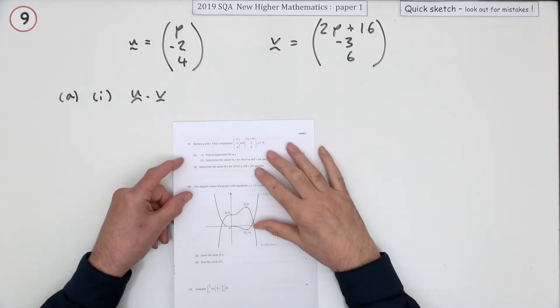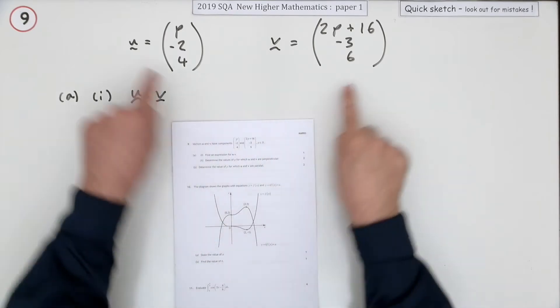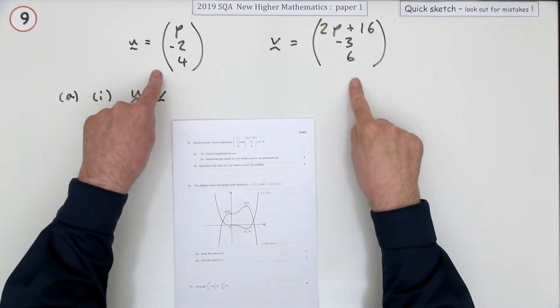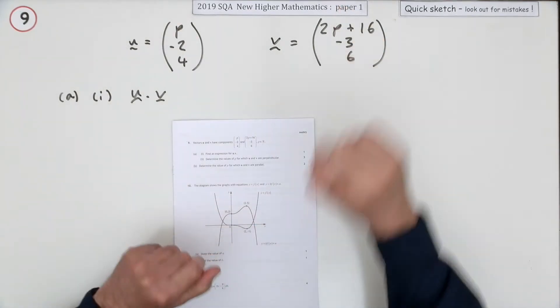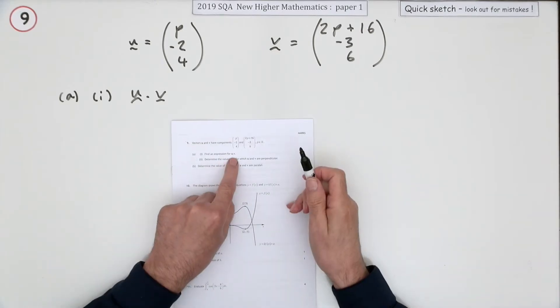Number 9 from the 2019 Higher Maths Paper 1, up to six marks here - vectors and scalar product. You're given these two vectors with some unknown value p in both of them, and the first part says simply find an expression for u.v, the scalar product of these two.